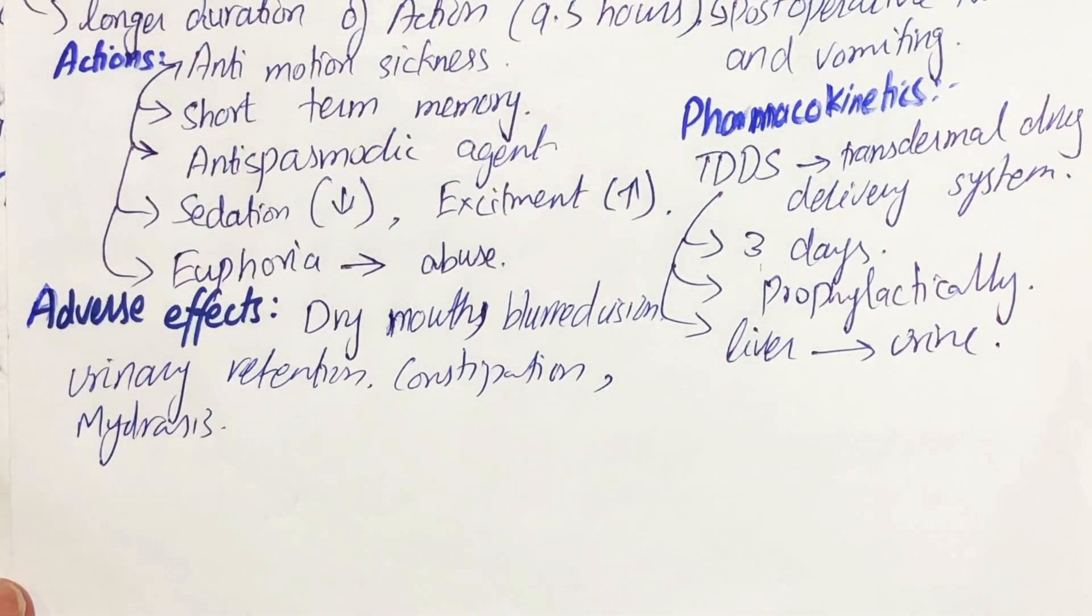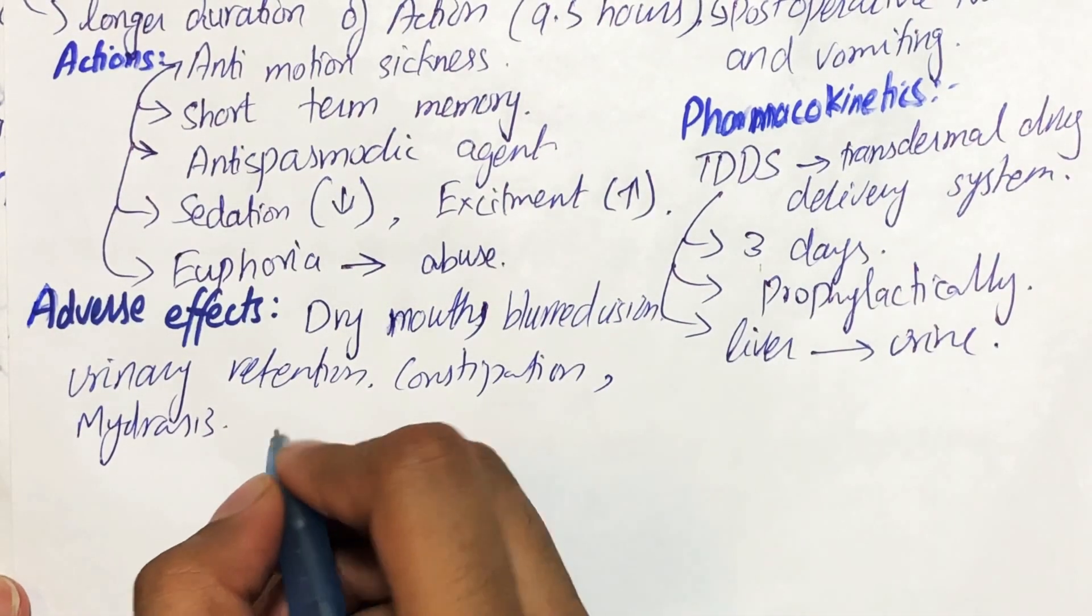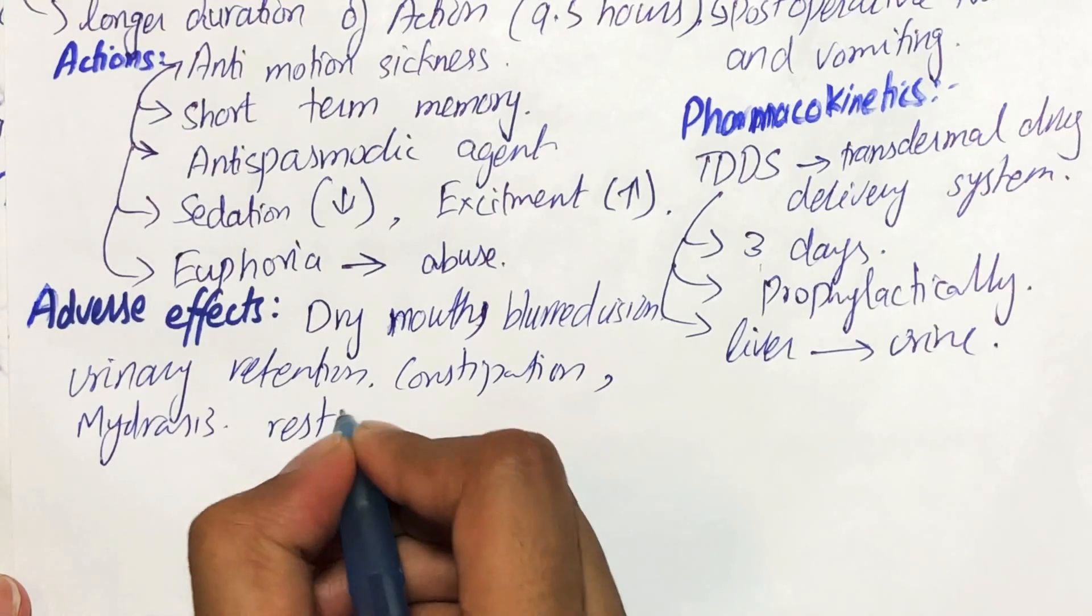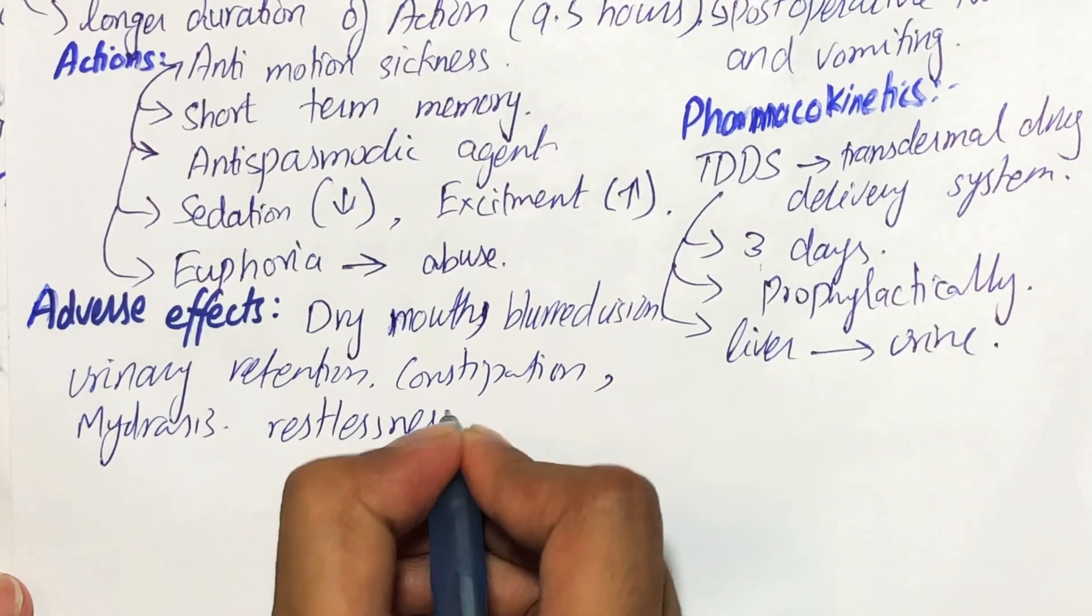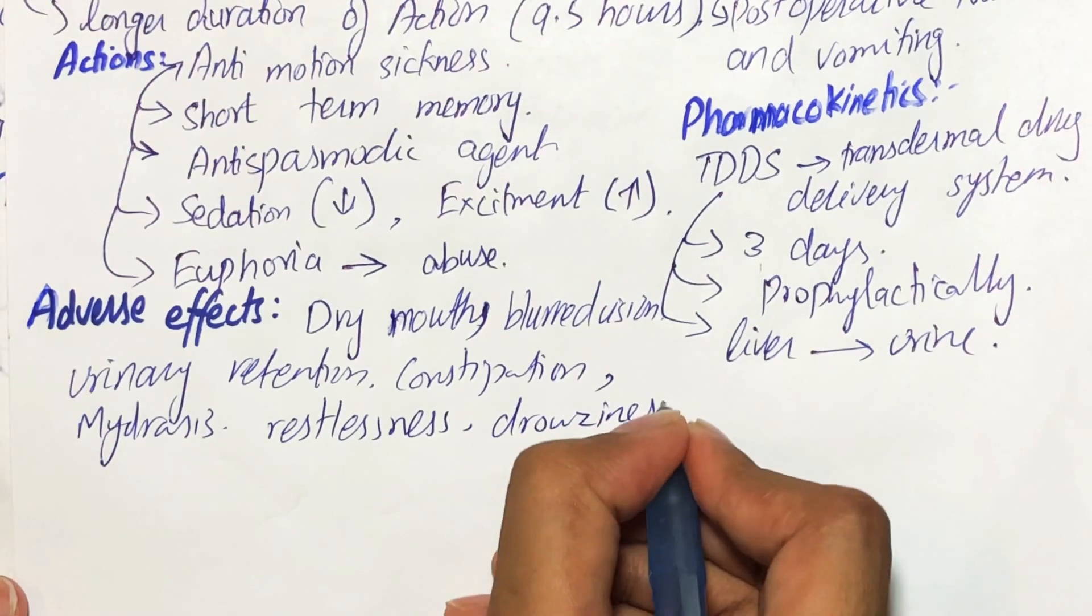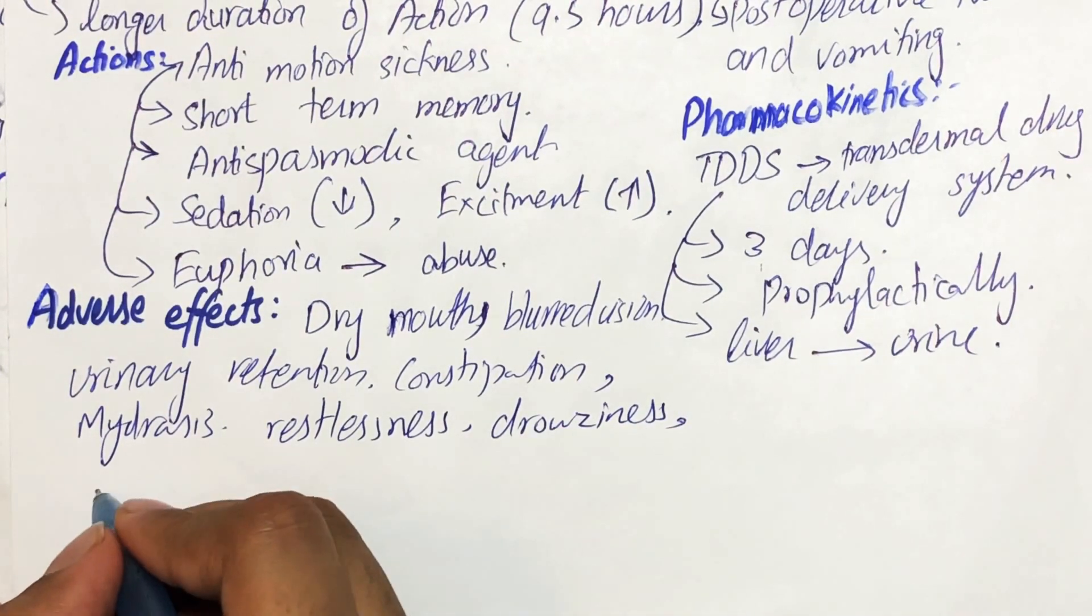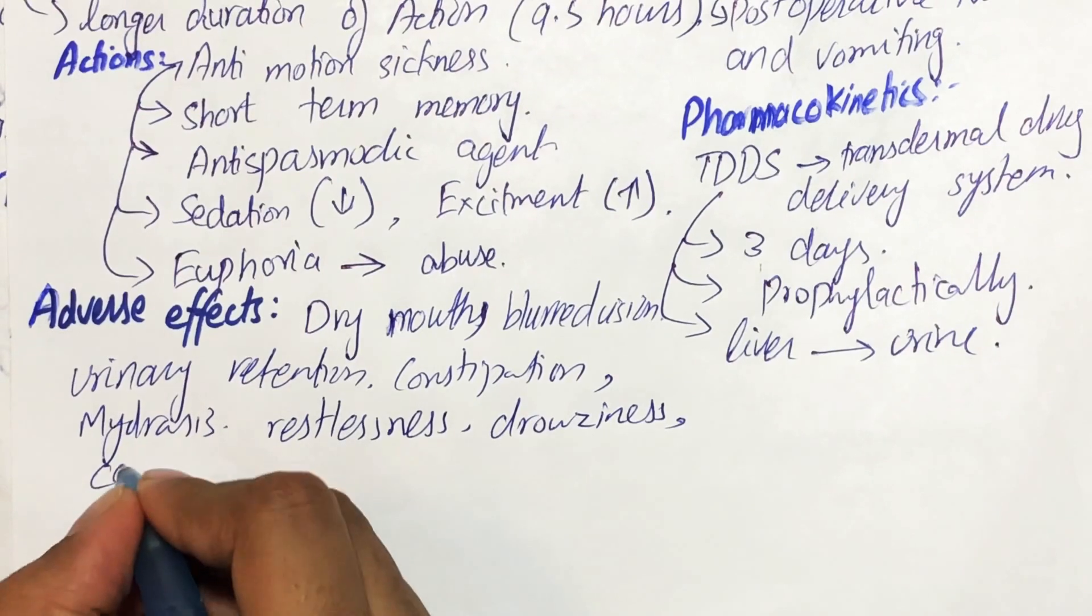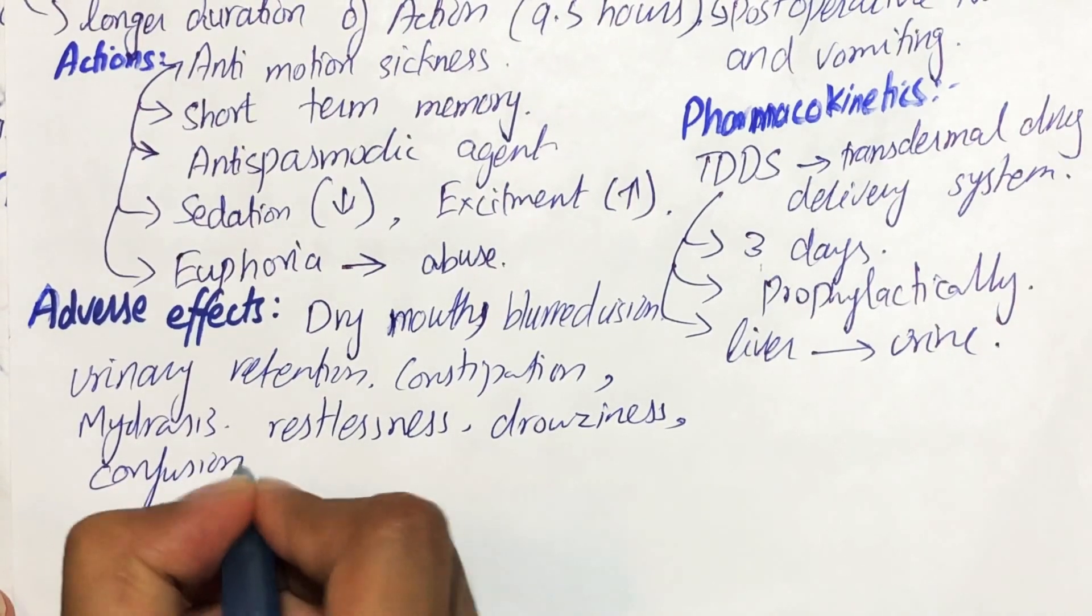But CNS effects of this agent is much greater than that of atropine. So it can also cause restlessness, drowsiness, and confusion.